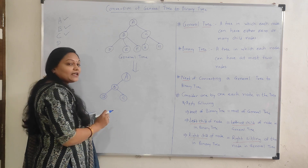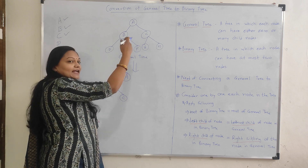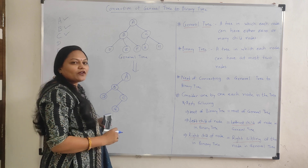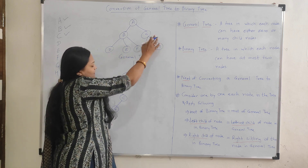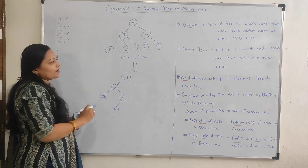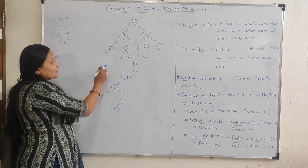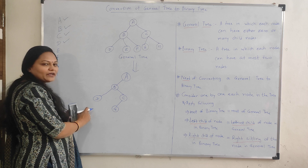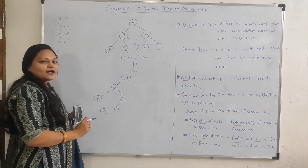Now consider node C. To find the left child, we look for the leftmost element of C in the general tree, which is G. So G is the left child of C in the binary tree. C has no right sibling, so C has no right child. Now consider node D. The leftmost element of D is not there, so D has no left child. But D has a right sibling E, so E becomes the right child of D.